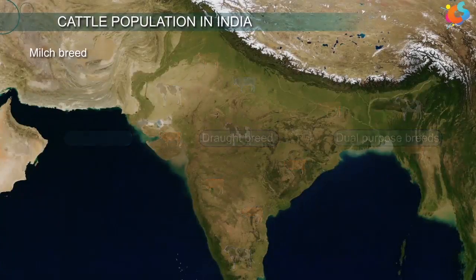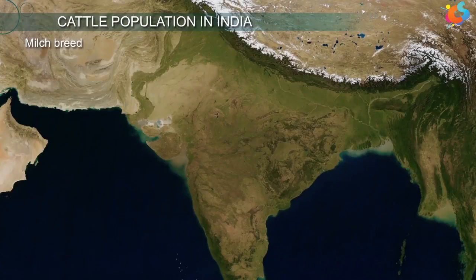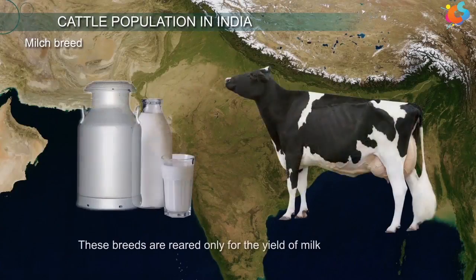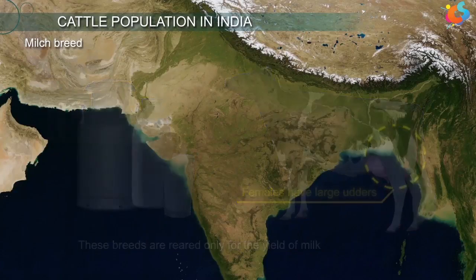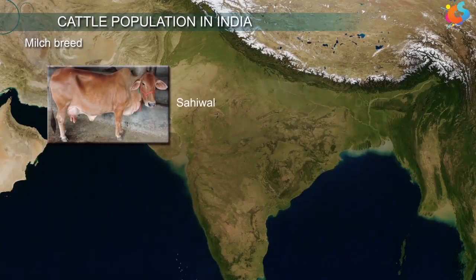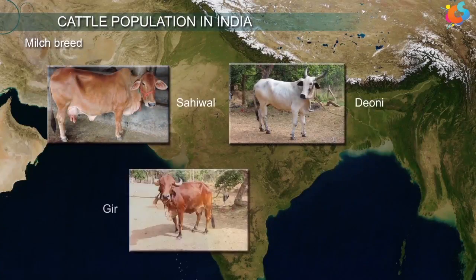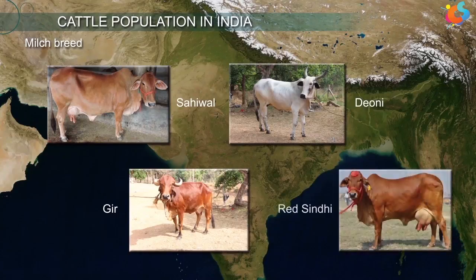Milk breeds are reared only for the yield of milk. The females have large udders. Examples include Sahiwal, Dhoni, Gir, Red Sindhi, etc.